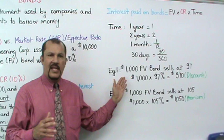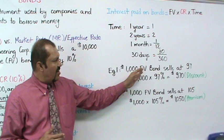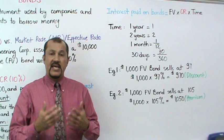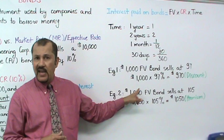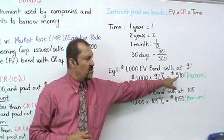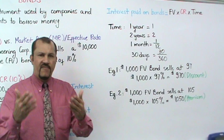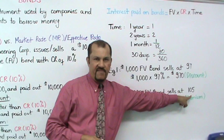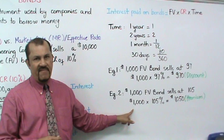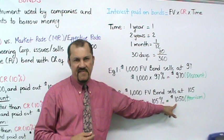Let's look at another example. What if a $1,000 face value bond sells at 97? You would take the $1,000 face value and multiply by 97%, giving you $970 — the bond is selling at a discount because it's selling at less than the face value of $1,000. Next example: the same $1,000 face value bond sells at 105. You take $1,000 times 105%, which gives you $1,050. This sells at a premium because it's selling at an amount greater than the face value of $1,000.